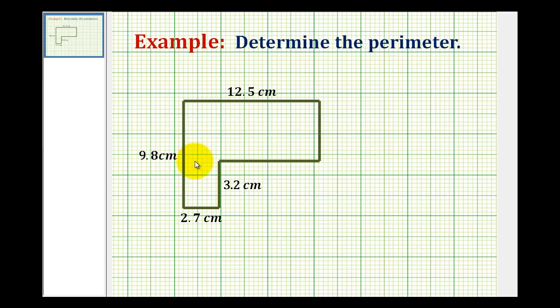We want to determine the perimeter of the given polygon. To determine the perimeter, we must add the lengths of all of the sides.